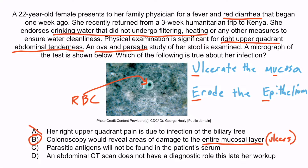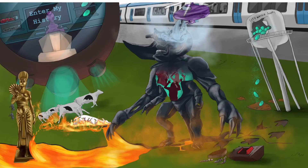Choice A is wrong — right upper quadrant pain can be caused by an infection in the biliary tree; however, Entamoeba histolytica is not known to infect the biliary tree, but rather the liver itself, causing a hepatic abscess. Remember that smaller stream carrying hot lava to the liver-spotted cows, with one of the cows melting to represent a hepatic abscess. Choice C is wrong because you can find antigens in the serum as well as the stool — remember within the escape pod there were antigens in a tube of blood and a tube of stool. Choice D is wrong because right upper quadrant pain in a patient with Entamoeba histolytica is suspicious for a hepatic abscess, so a CT scan would be appropriate even this late in her workup. And that should be all you need to know about Entamoeba histolytica.